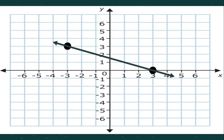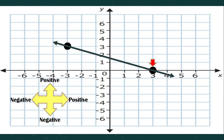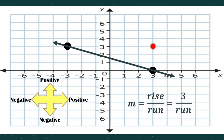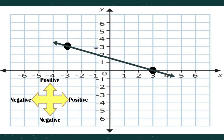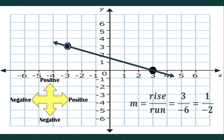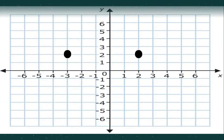For another example, we will start on this point and count the rise to reach the other point: positive one, two, three — so the rise is positive three. Then we count the run to the left, which is negative: negative one, two, three, four, five, six — so our run is negative six. When we simplify three over negative six, both numbers can be divided by three, giving us negative one half. This graph is decreasing and has a negative slope.